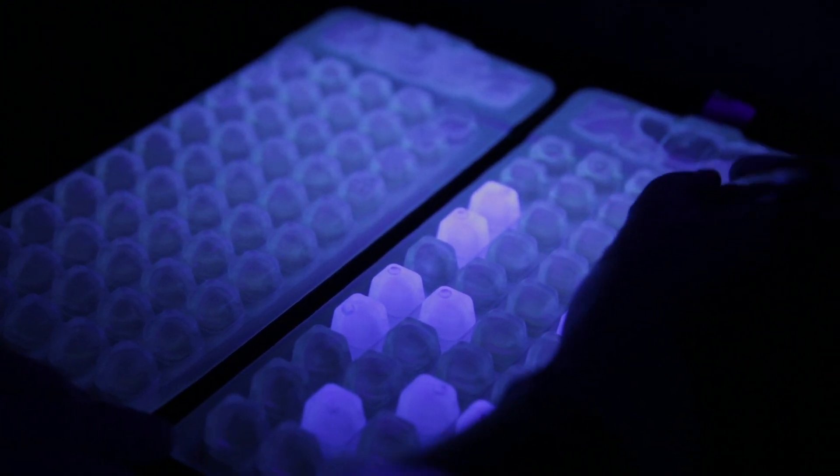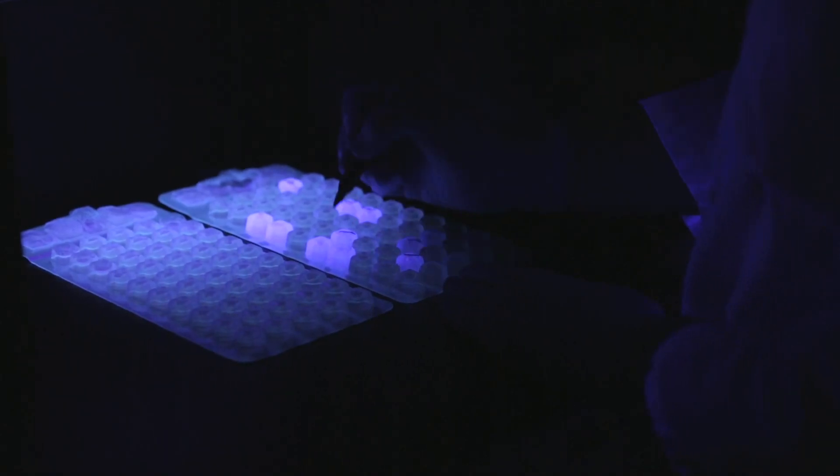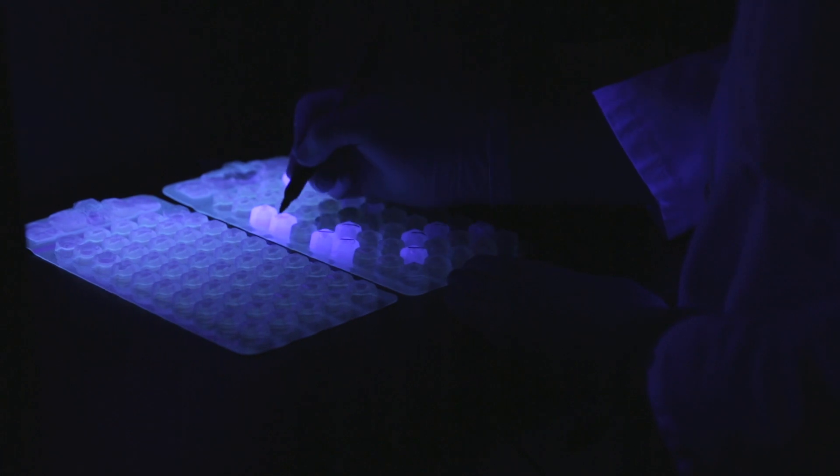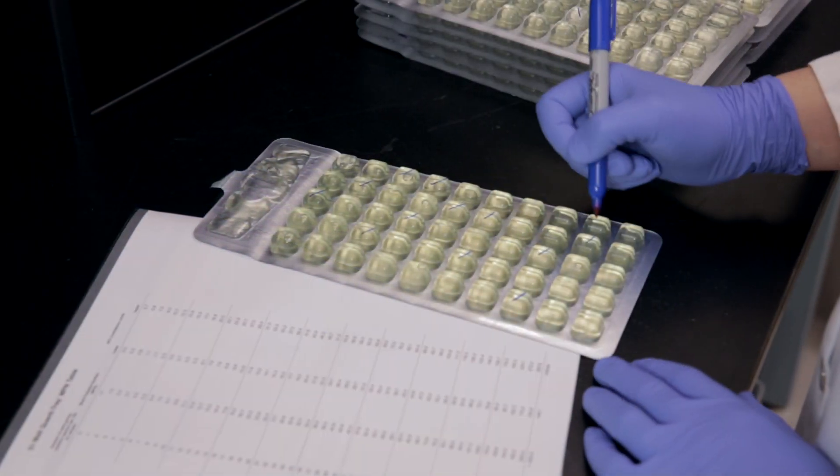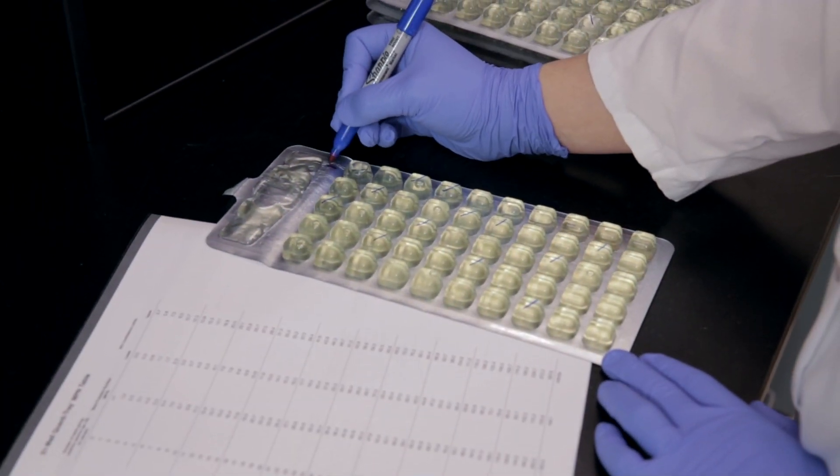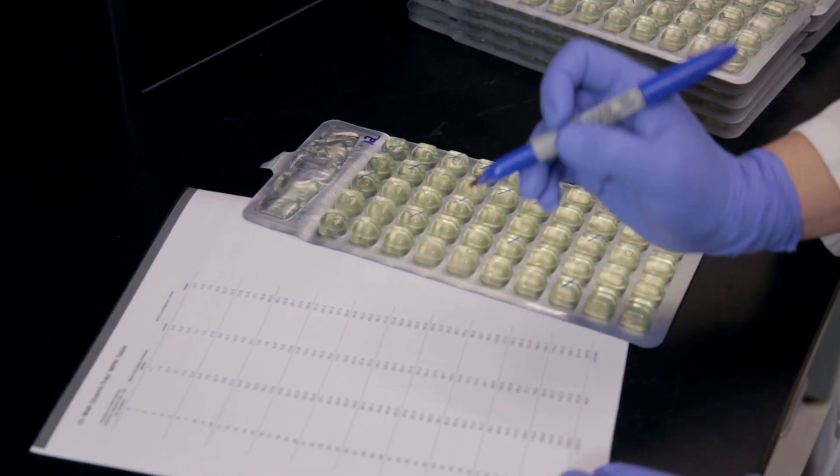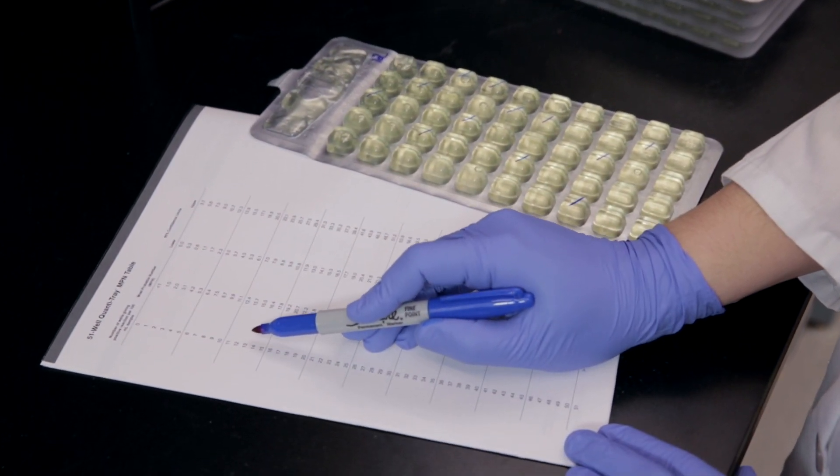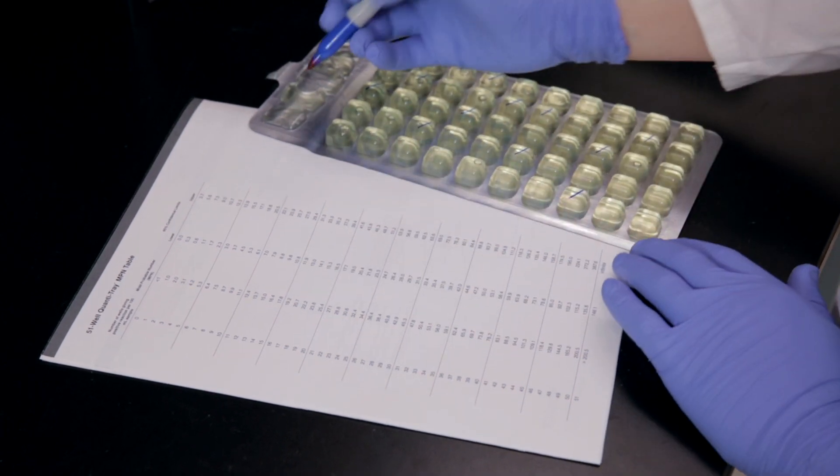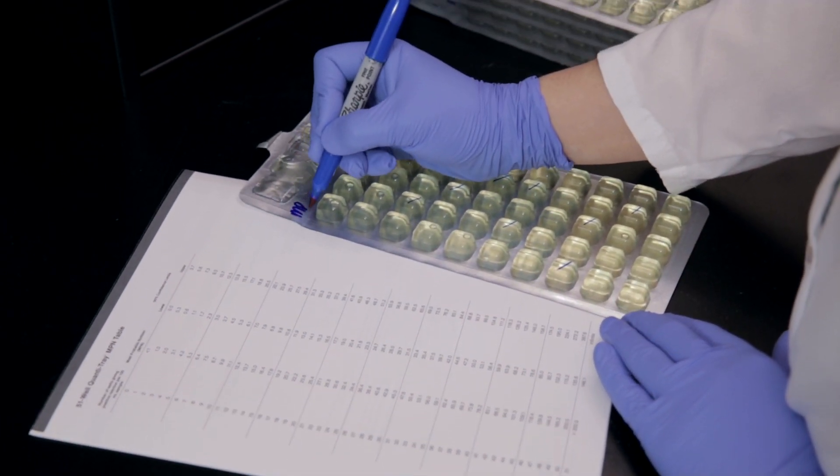As you count the blue fluorescent wells, place a checkmark on each positive well. Count the checked wells and then refer to the corresponding positive well line on the MPN table, included with the Quantitrays. The most probable number for this example is 13.7 per 100 ml.